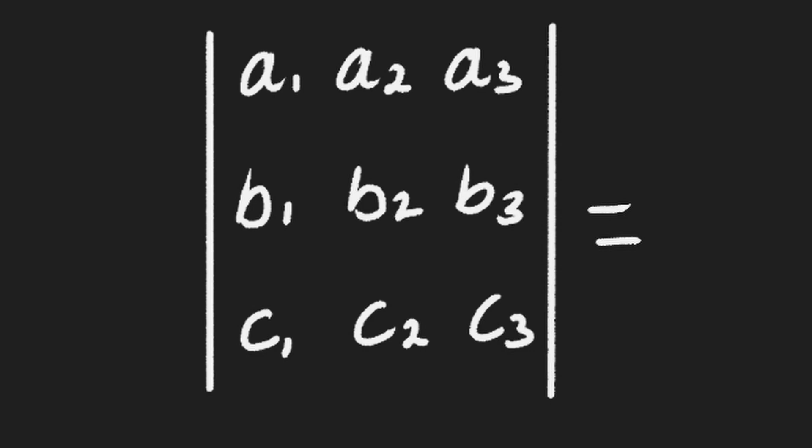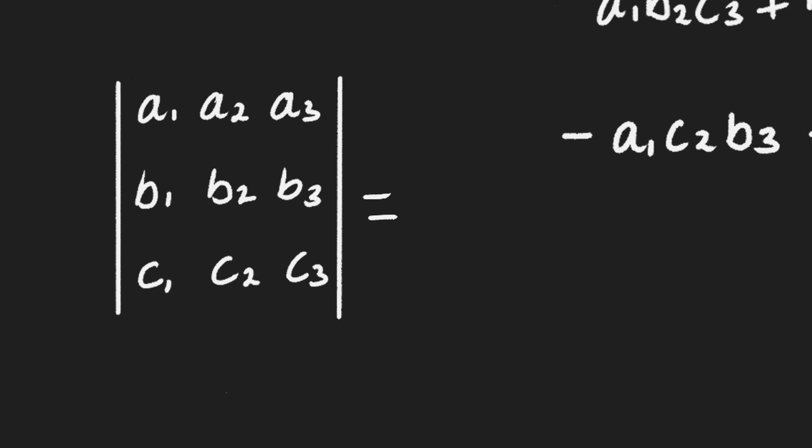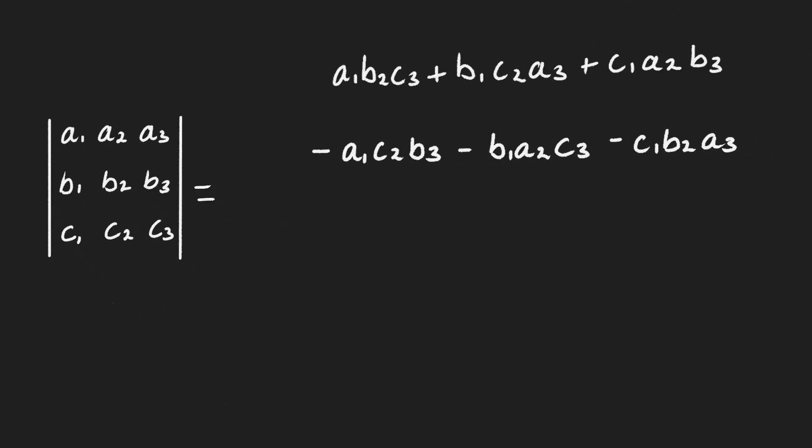Here we have our typical 3x3 determinant with letters defining the rows, and the subscript of each letter defines the column that it's in. Next to it, I have the full determinant of this matrix, to allow us to look and see what patterns we can deduce.